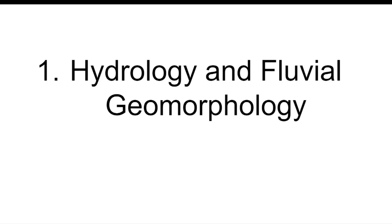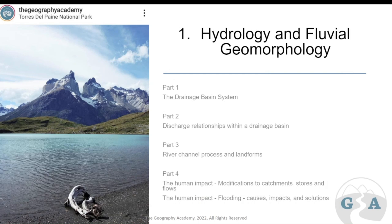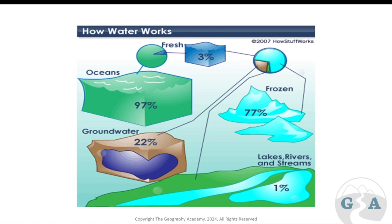This is hydrology and fluvial geomorphology. We'll look through four sections in this unit, starting with Part 1: the drainage basin system. This section is particularly vocabulary-heavy, so pause and make sure you know each term as you go along. Afterwards, write out all your definitions and learn them well — using this vocabulary efficiently makes answering exam questions very simple and easy to score highly on.